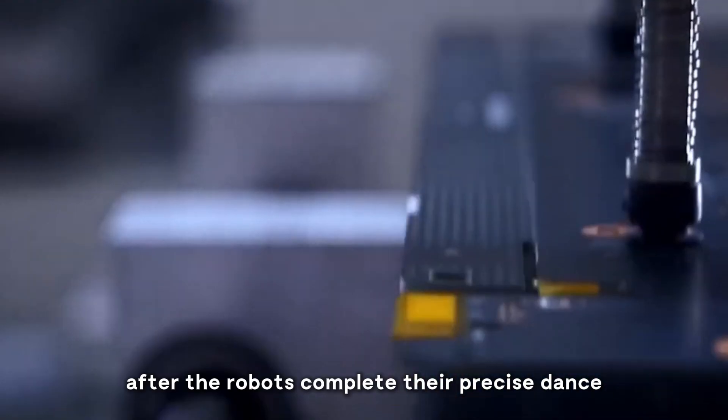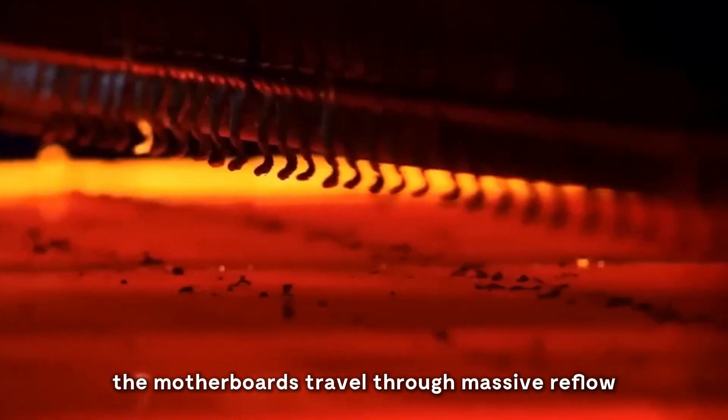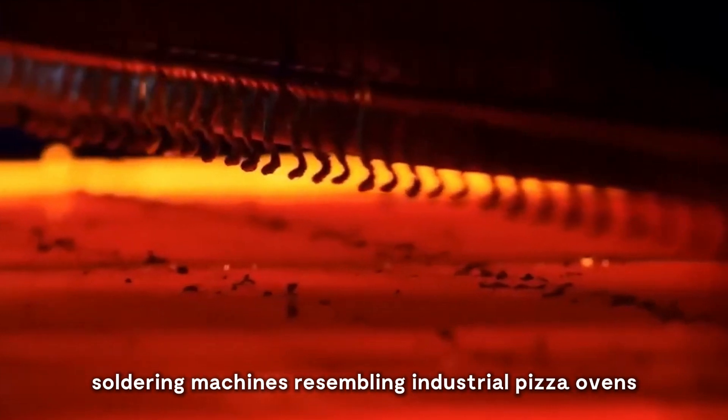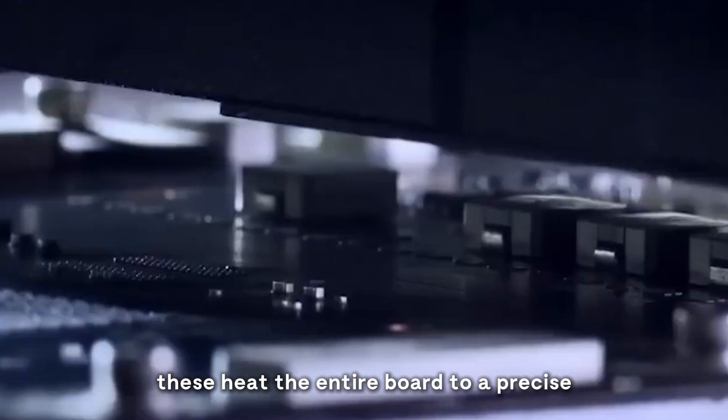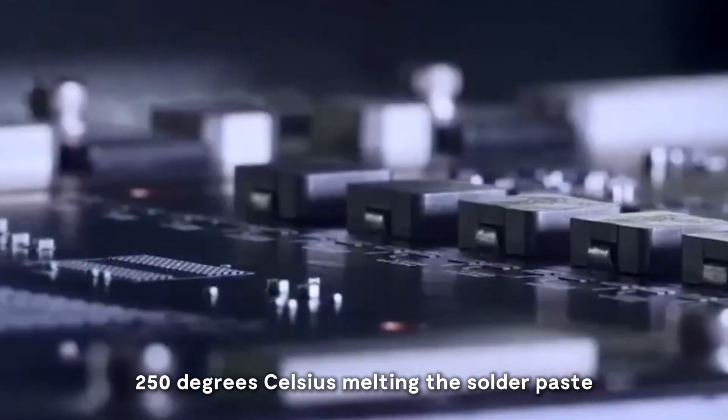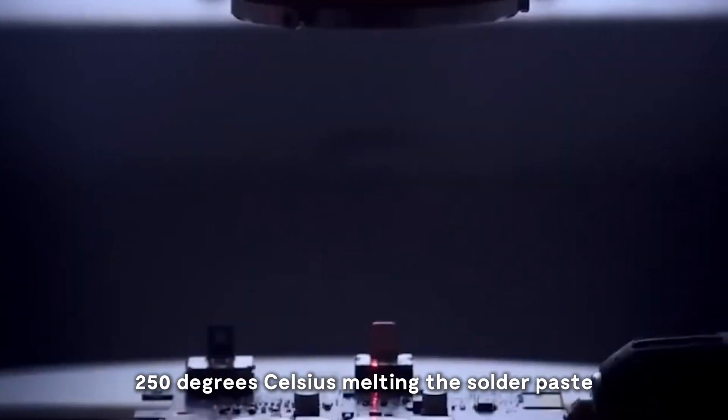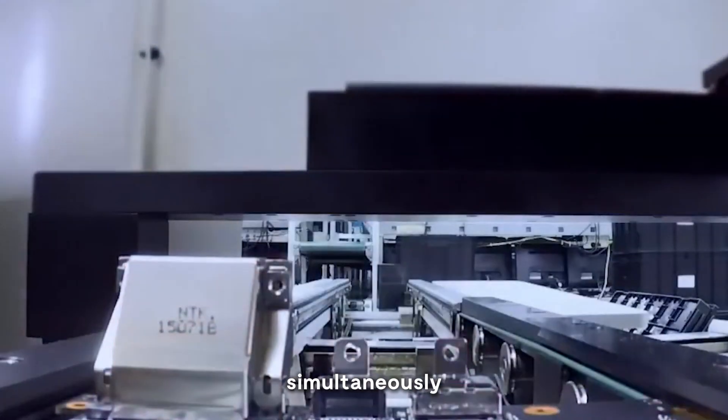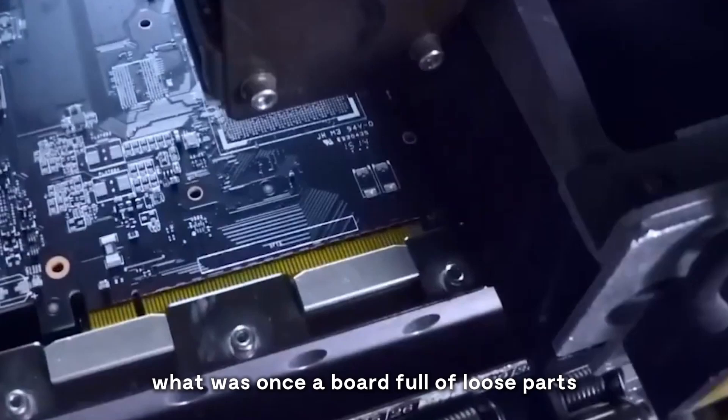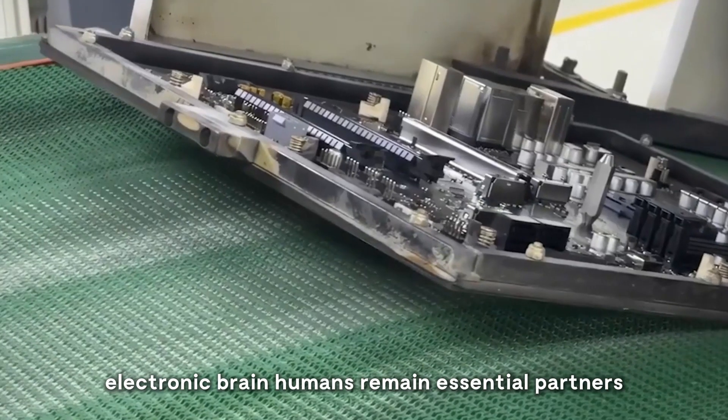After the robots complete their precise dance of component placement, the motherboards travel through massive reflow soldering machines resembling industrial pizza ovens. These heat the entire board to a precise 250 degrees Celsius, melting the solder paste and creating permanent electrical connections for all components simultaneously. What was once a board full of loose parts transforms into a functioning electronic brain.